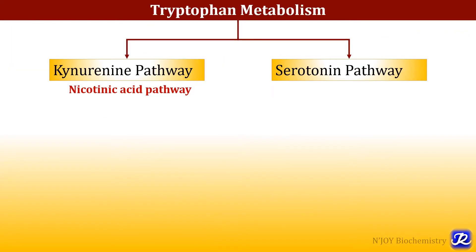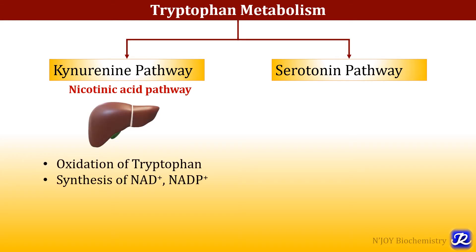Tryptophan metabolism has many branching points but for convenience it can be studied with the help of two major pathways. The first pathway is called the kynurenine pathway or nicotinic acid pathway, and the second pathway is the serotonin pathway which leads to synthesis of both serotonin as well as melatonin. The kynurenine pathway is the major pathway of oxidation of tryptophan to acetyl-CoA and is responsible for synthesis of NAD+ and NADP+, which is why it is also called the nicotinic acid pathway.